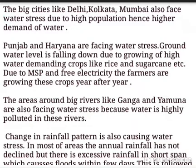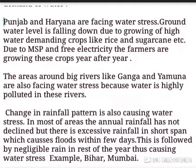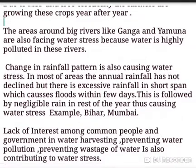Due to minimum support price and free electricity provided to farmers, they continue growing these water-intensive crops year after year, which is depleting the groundwater. The areas around big rivers like the Ganga and Yamuna are also facing water stress because the water in these rivers is highly polluted.